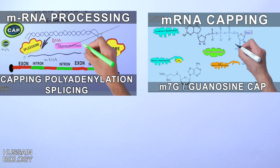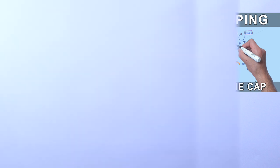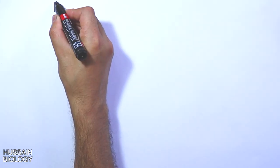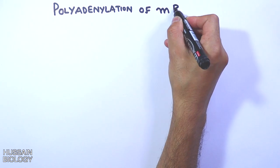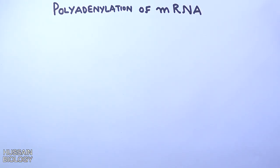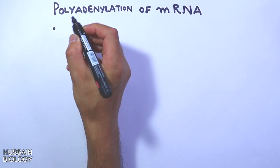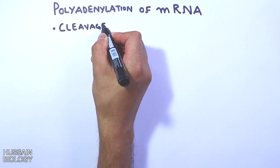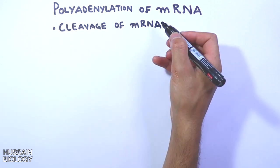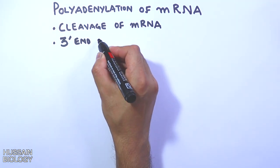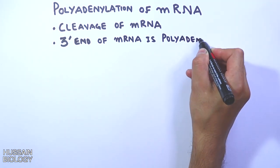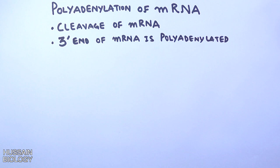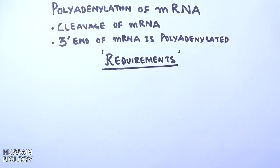In the previous video of the transcription series we discussed about the 5' capping process. If you want to watch that video first, the link is in the description. Now in this video we'll be discussing about the polyadenylation of mRNA, which is also part of mRNA processing. In this polyadenylation process we get the cleavage of mRNA first at a specific sequence and then the 3' end of mRNA is polyadenylated. Before getting to the actual process, first let's see what are the requirements for polyadenylation.